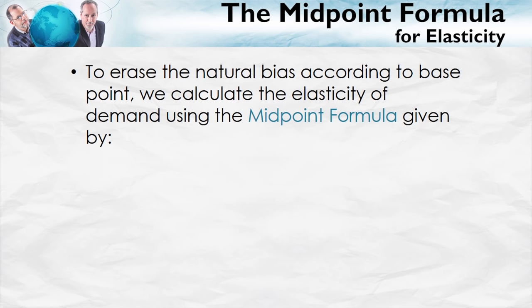We know that elasticity is the percentage change in quantity divided by the percentage change in price. How do we calculate the percentage change in something? It can be a little tricky. Suppose you're driving at 100 miles per hour and you increase speed by 50% — you're now going 150 mph. Then you decrease speed by 50% — you're going 75 mph. So how is it that you can increase by 50% and decrease by 50% and not be back where you started? The answer is we've changed the base by which we're calculating the percentage change. We don't want this inconsistency when we calculate elasticity — we want people to get the same elasticity whether calculating from the lower or higher base.